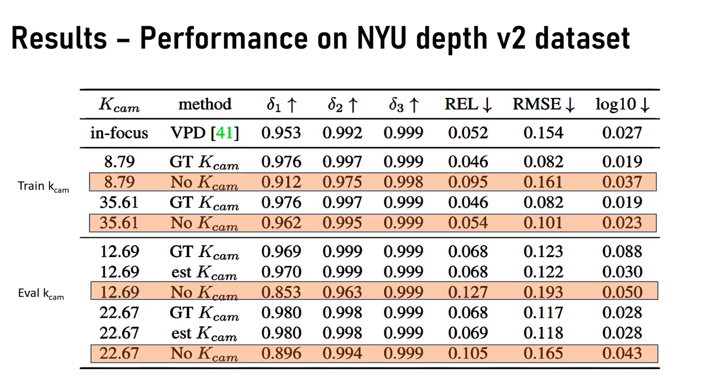The rows with no Kcam value means we do not use the correction based on Kcam, and ground truth Kcam means we just use the known Kcam value, and estimated Kcam means we use the estimated Kcam values. The difference between the ground truth and estimated Kcam values, the errors are not very significant, but if we do not make the correction, the errors are higher than when we make the correction.